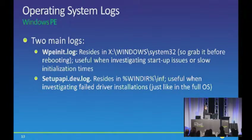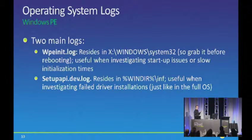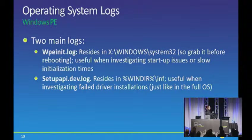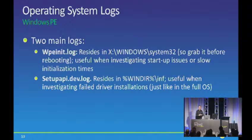That was the set of log files for Windows itself. Now let's shift to Windows PE. The list is fairly small because it really only does two things. When Windows PE boots up, it initializes, and all those details end up in the wpeinit.log. And it installs drivers, which just like in the full operating system end up in the setupapi.log. You may need to look at those to figure out why did it take so long for Windows PE to start up, what errors were encountered during initialization especially around driver injection, and why couldn't I find a driver or why isn't networking working in Windows PE.